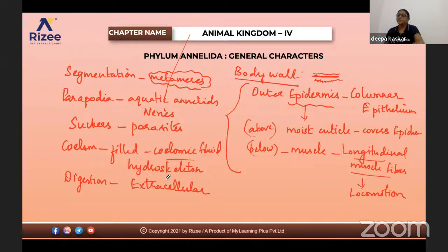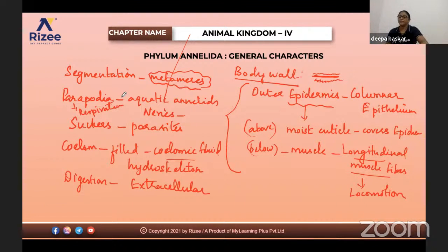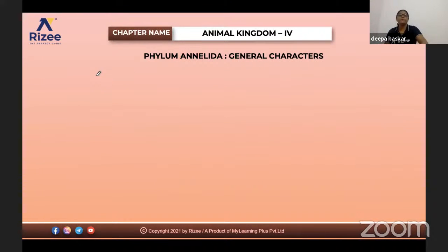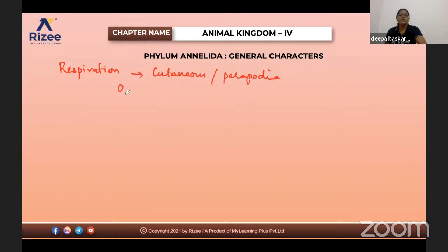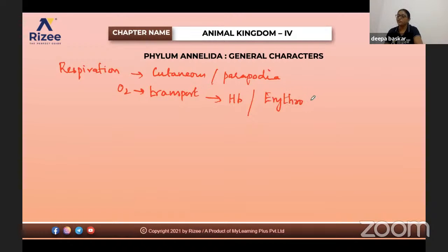The digestive system is complete and digestion is extracellular. Regarding respiration, they do cutaneous respiration and apart from that, parapodia are also involved in respiration in Nereis — gas exchange takes place through minute pores. They have a closed circulatory system. Regarding respiratory pigments, oxygen is transported by pigments like hemoglobin or erythrocruorin.